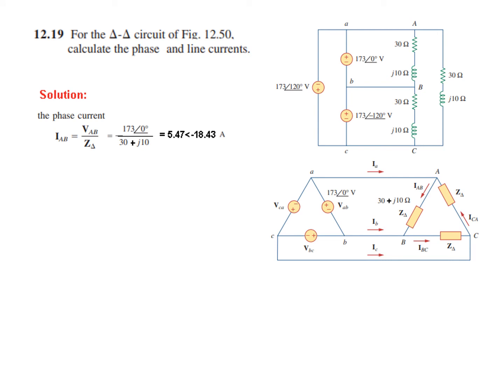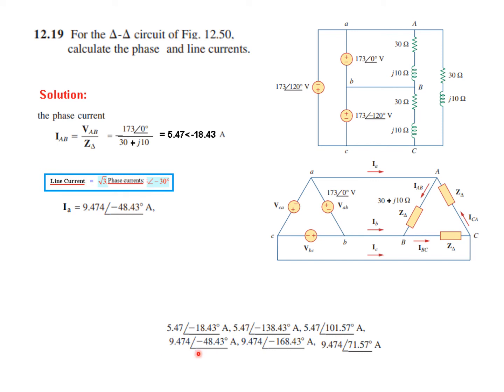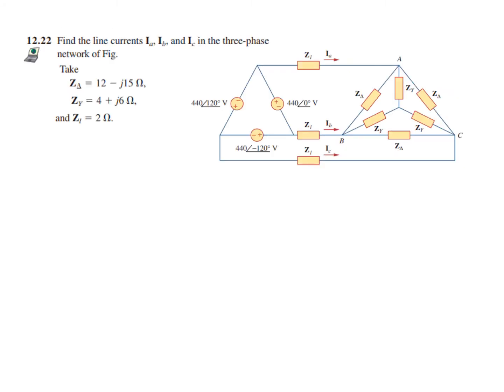The other two phase currents can easily be found by adding ±120° to the angle. For the line current, using the formula IA = √3 × IAB ∠−30°: 5.47 × √3 = 9.474, and the angle is −18° − 30° = −48°, giving IA = 9.474∠−48°. The other two line currents follow by shifting ±120°. These are the answers you can verify your work against.